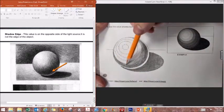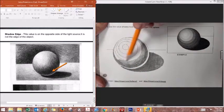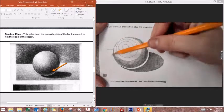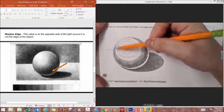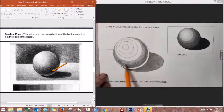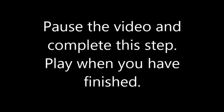So what I am going to do as I complete this is make sure that they transition and it is not too strong of a contrast where one value starts and the other one stops. It is a gradual change. Please pause the video and try to create your shadow edge, and then when you are ready, push play again.